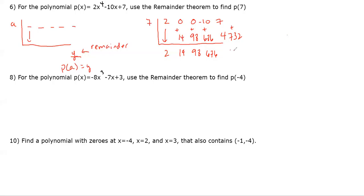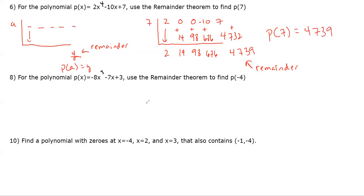Last step: 7 × 676 = 4732; 7 + 4732 = 4739. This is our remainder, and by the remainder theorem, P(7) = 4739.